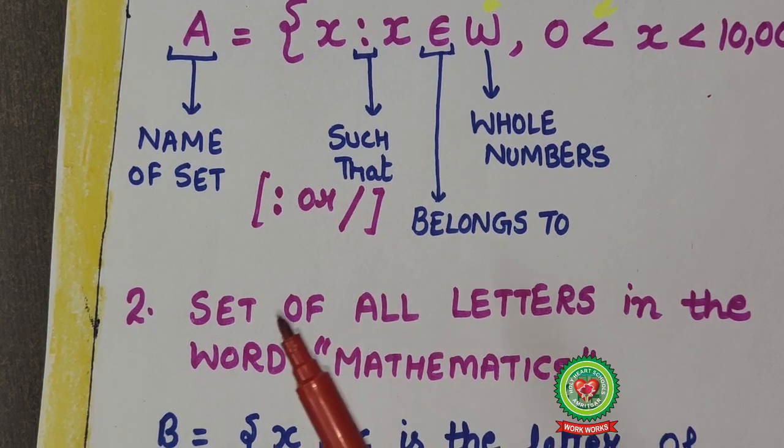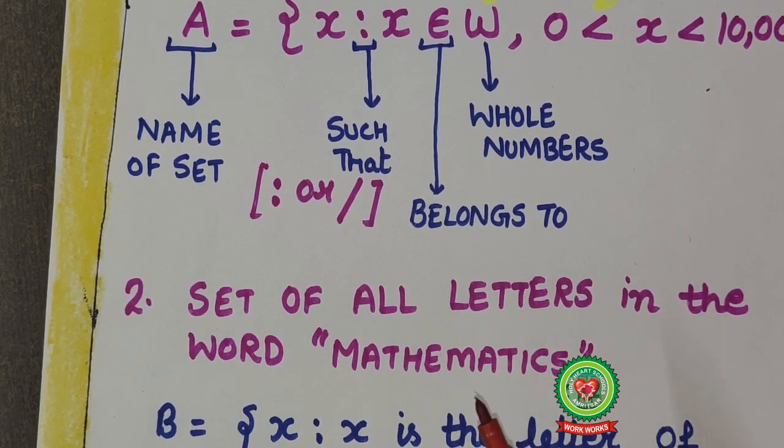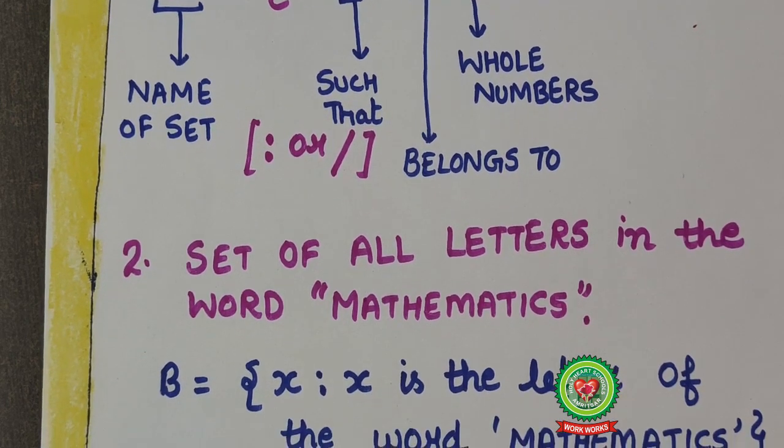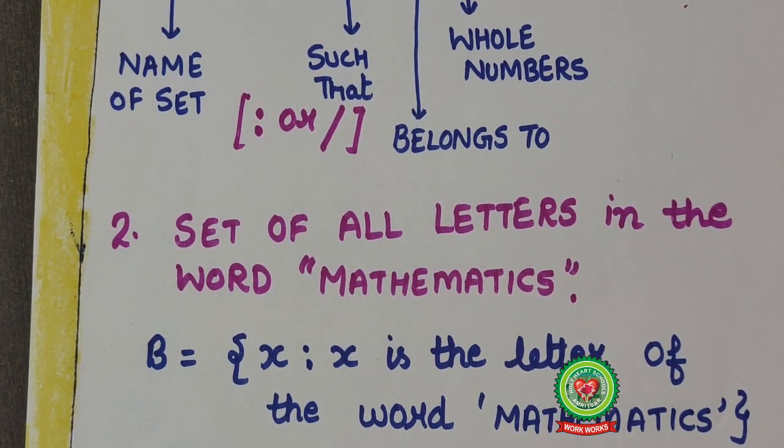Can we write set of all letters in word mathematics using set builder form? Yes. Here B equals x such that x is a letter of word, then in commas we will write mathematics, comma close curly bracket.